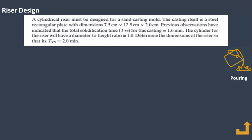We have two solidification times: one for the casting and one for the riser. The time for solidification of the casting is less than the time for solidification of the riser. Let's write down Chauvinov's rule: the time required for solidification equals the mold constant times the volume divided by the surface area, raised to exponent n.